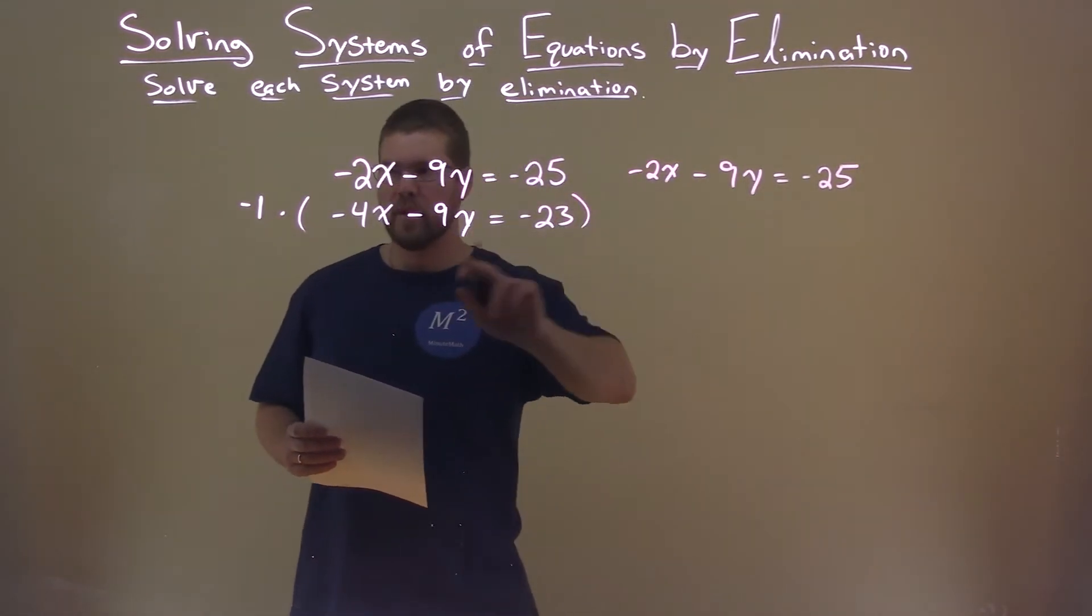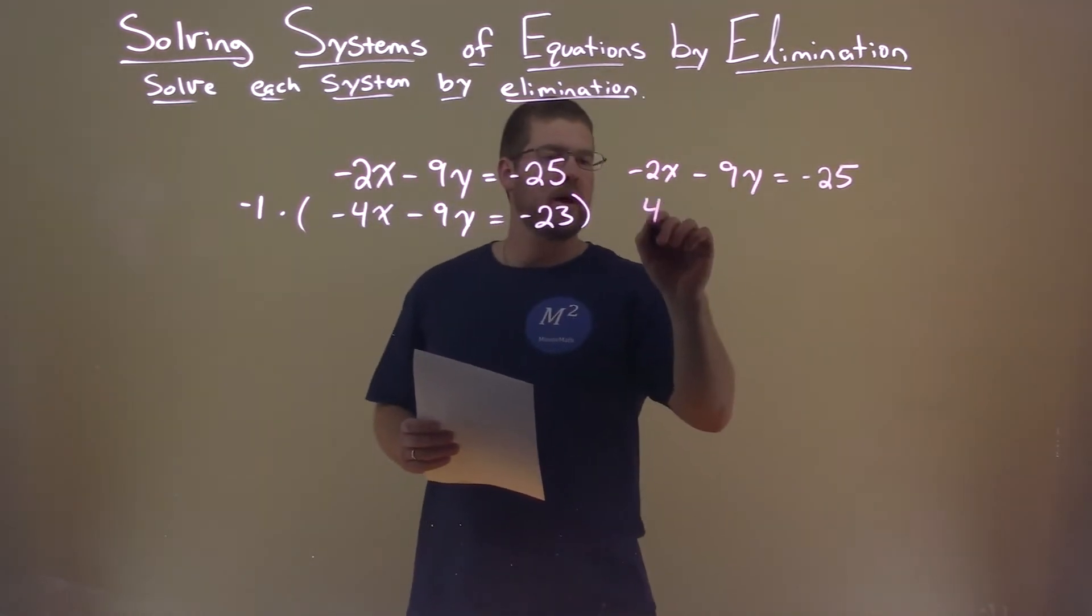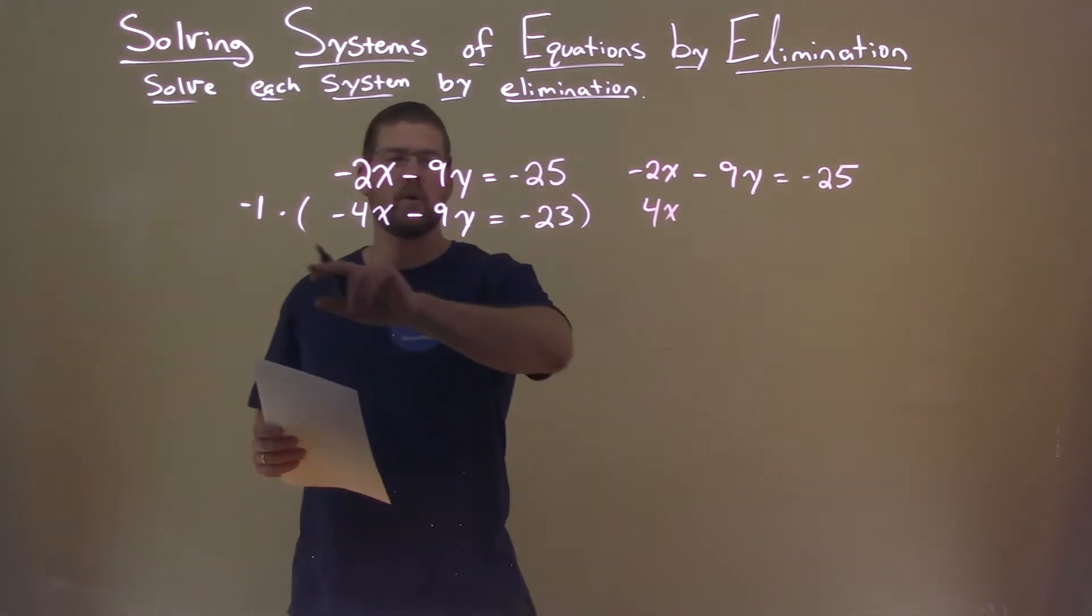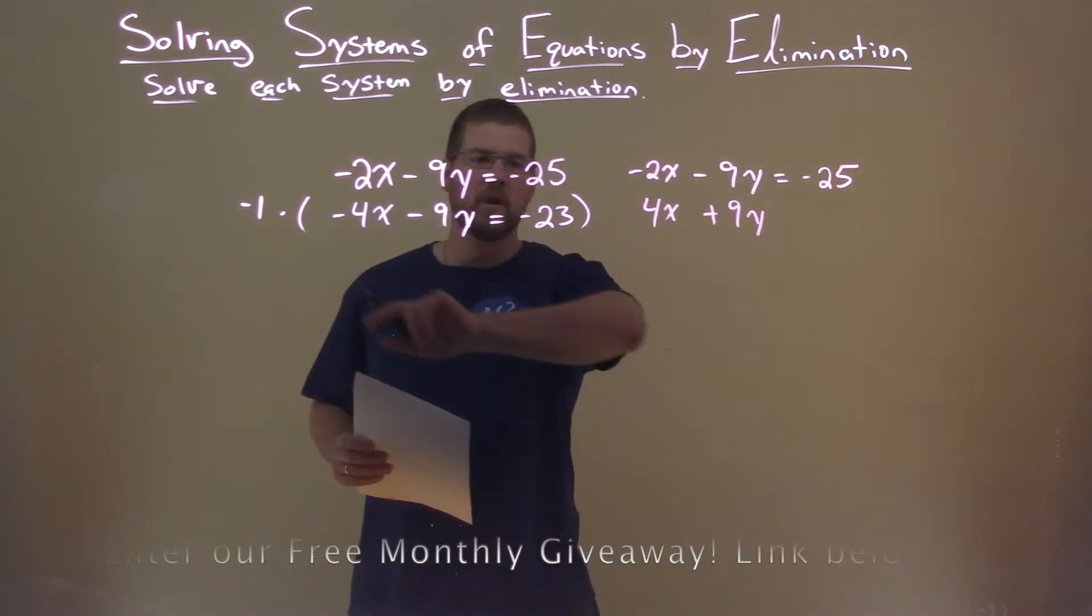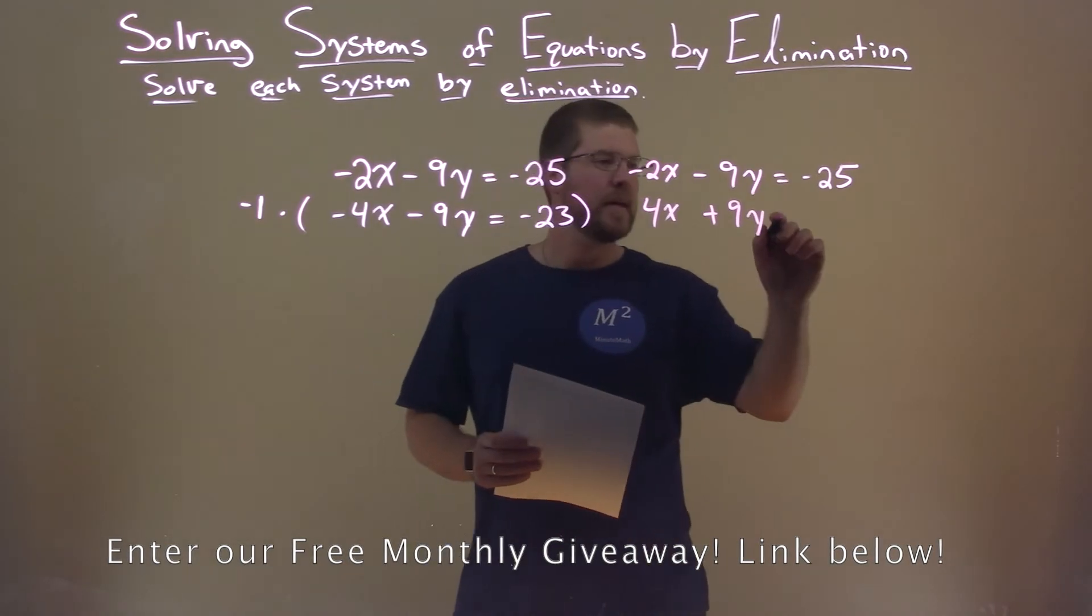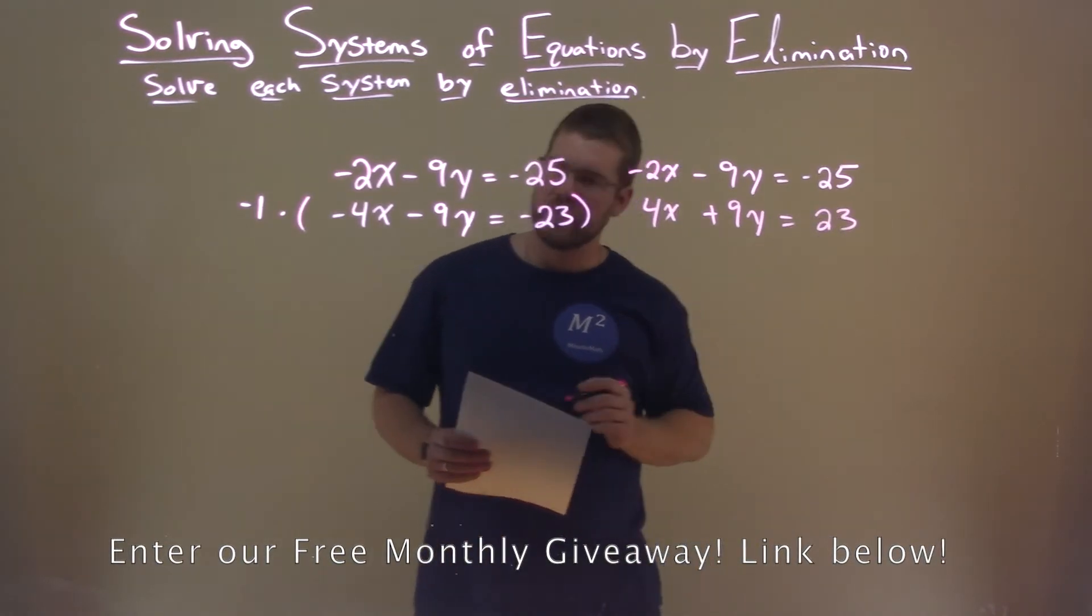Don't forget any parts. Negative 1 times negative 4x is positive 4x. Negative 1 times negative 9y is positive 9y. Negative 1 times negative 23 is positive 23.